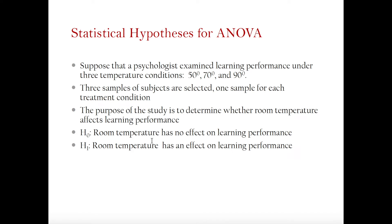To understand one-way between-subjects analysis of variance, consider this problem. Suppose that a psychologist examined learning performance under three temperature conditions. Some of you may have tried studying in a very cold room, or in a very humid and hot room. The question is: do these temperature conditions have an effect on how much we learn? That is essentially what we want to know.